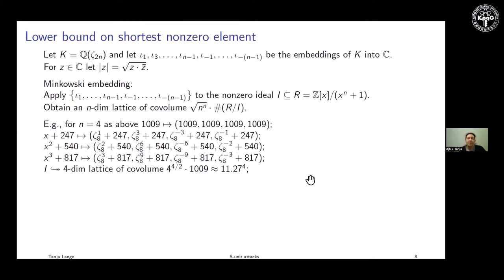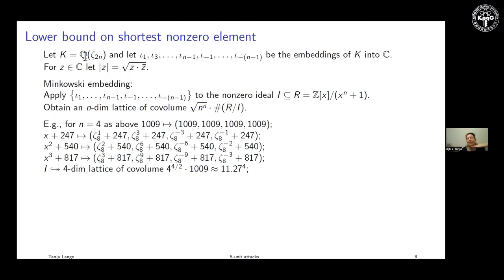How short can these vectors get? We need more notation. We look at the cyclotomic ring — the ring of integer polynomials modulo x^n + 1, which is a factor of x^{2n} − 1. So x is the 2nth root of unity, and zeta_{2n} is a 2nth root of unity, which is a complex number: e^{2πi/(2n)}.